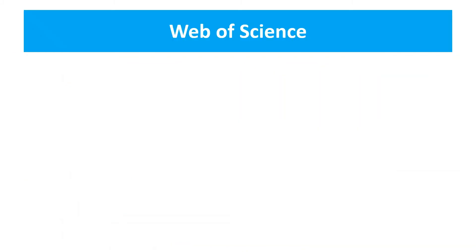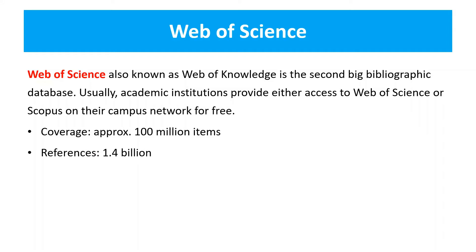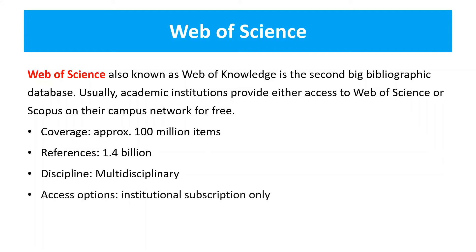Now, Web of Science — also known as Web of Knowledge — is the second big bibliographic database. Usually academic institutions provide either access to Web of Science or Scopus on their campus network for free. It covers around 100 million items and 1.4 billion references. It is also multidisciplinary, but access is by institutional subscription only.